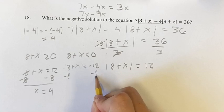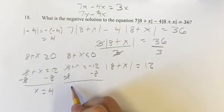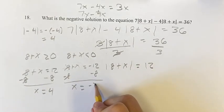Same thing over here. We can subtract 8 from both sides. Left with just x on this side, equal to negative 12 minus 8 is equal to negative 20.